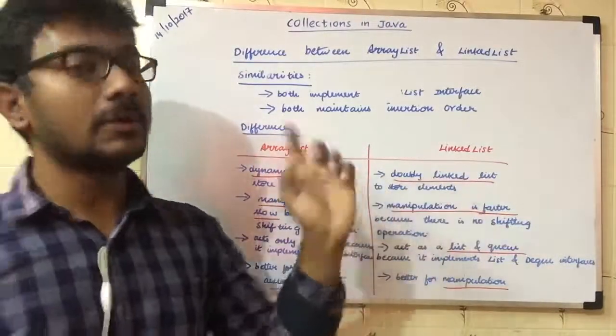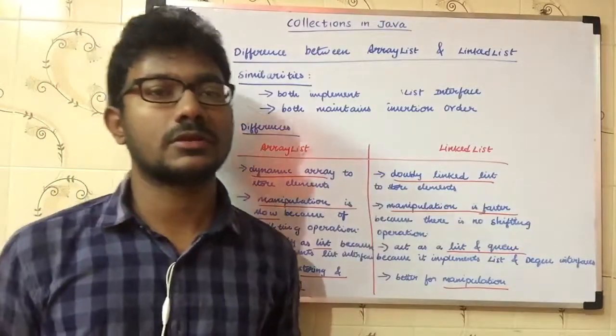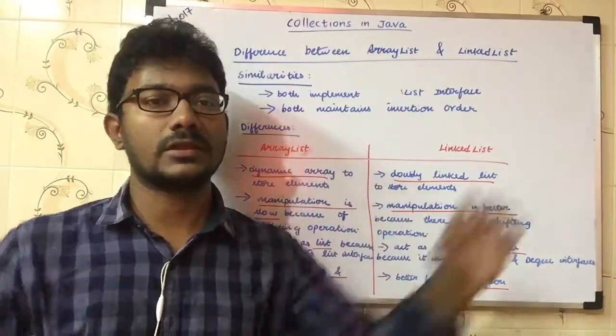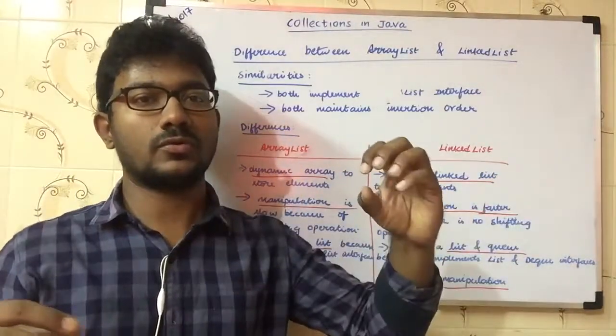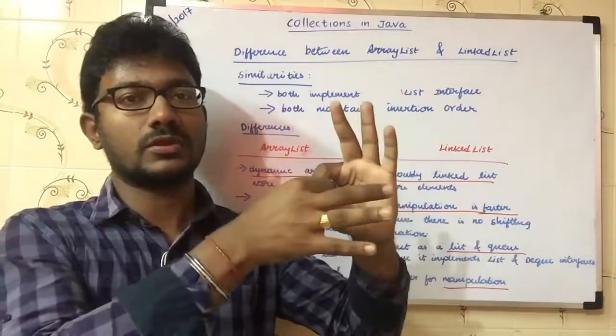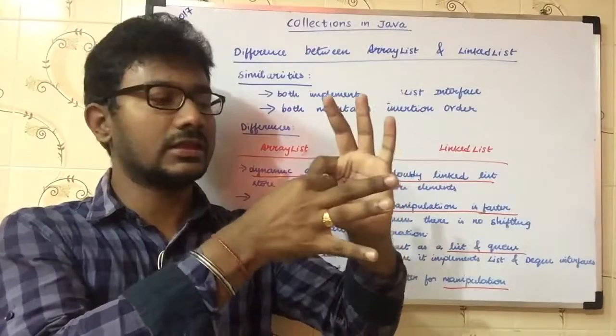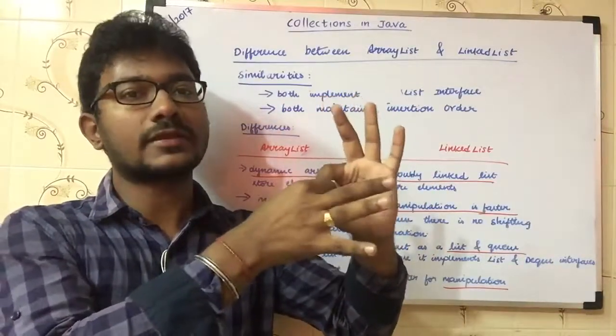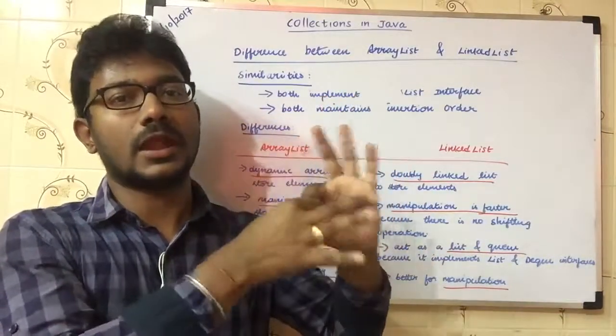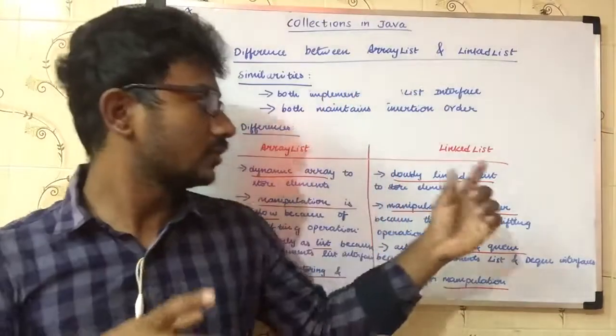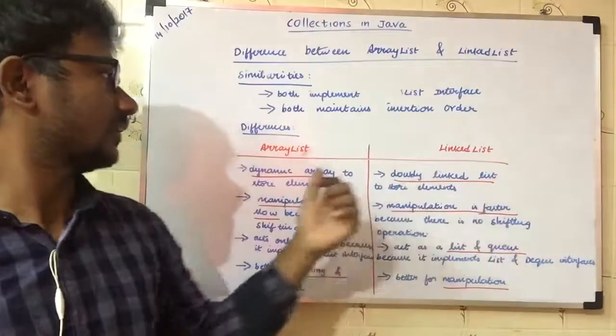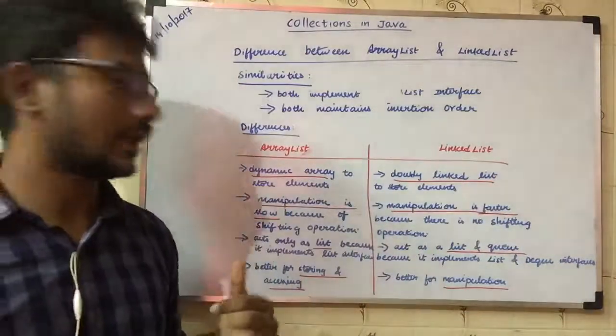LinkedList will search for the address of the next element. The data structure is a doubly-linked list — each node holds a connection to the address of the next and previous nodes. LinkedList is also dynamic.